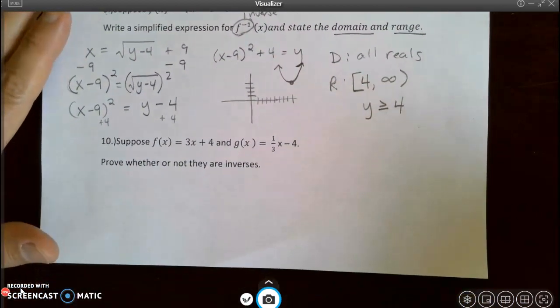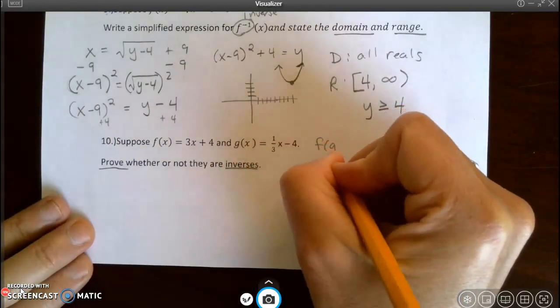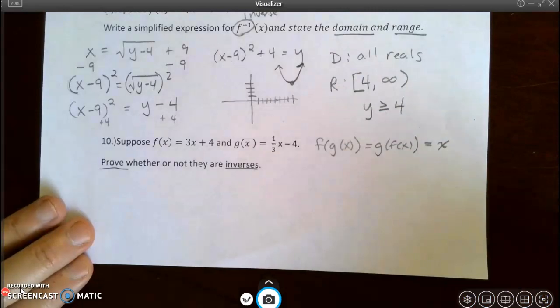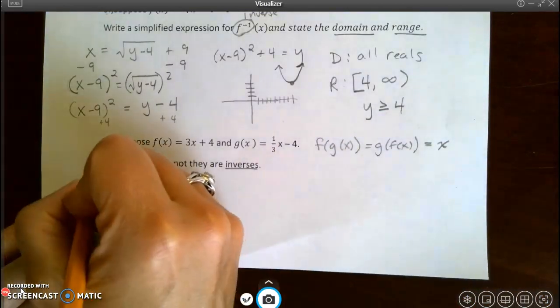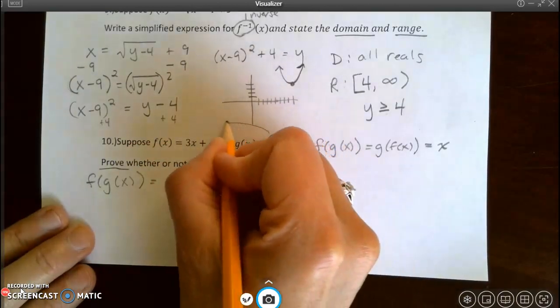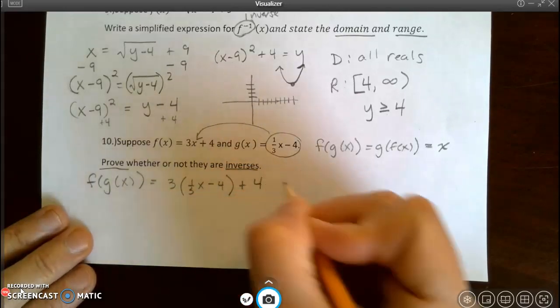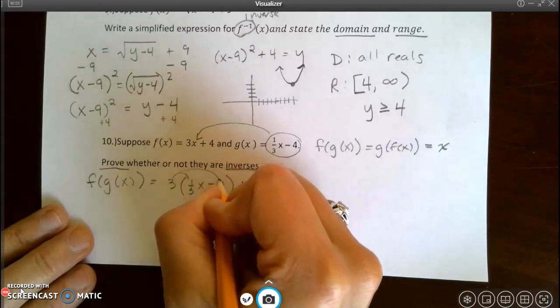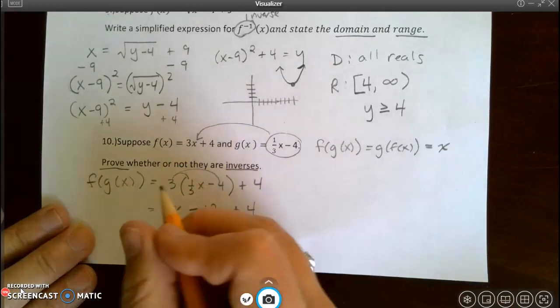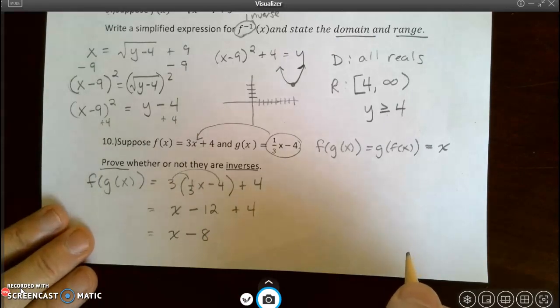And last, number 10. Prove whether or not these two functions are inverses. Well, remember to prove inverses, we need that f of g of x equals g at f of x, and they both have to equal x. So I'm just going to start with one of them. Why don't I start with f at g of x? So I'm going to put this function in right here. So 3 times (a third x minus 4) plus 4. I've got to distribute this 3 to both things inside the parentheses. So I get x minus 12 plus 4. And therefore, I get x minus 8.